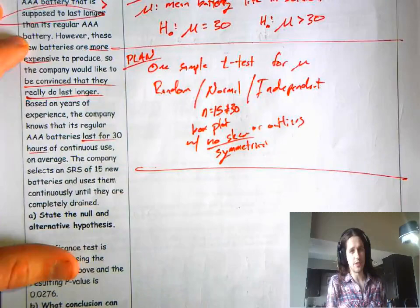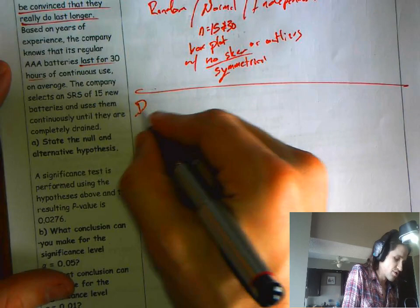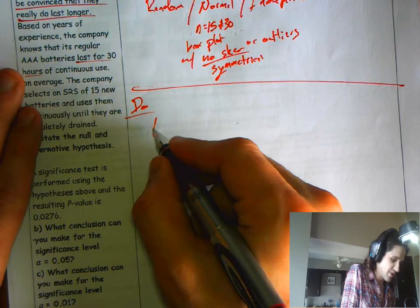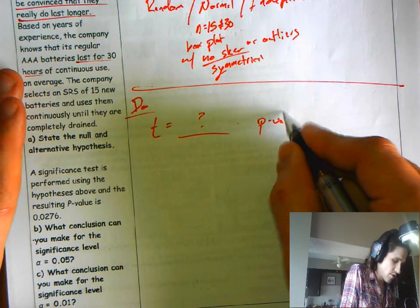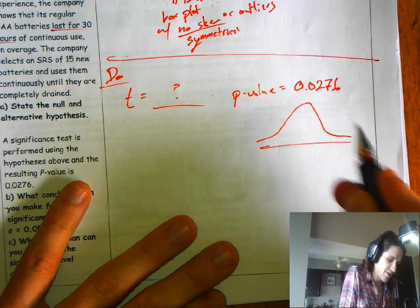Your do step, what would your do step be? Well, we don't know what your t-statistic is. It would give you some t-statistic. I don't know what it is. Mu naught is 0.0276. So visually what does that look like? Okay, so if these batteries really only lasted for mu naught equals 30 hours, well we got a value up here.